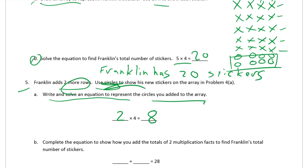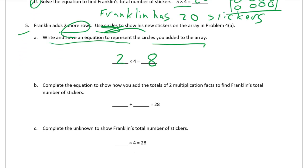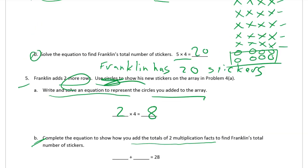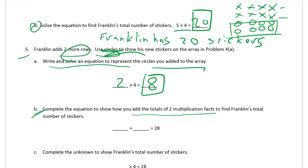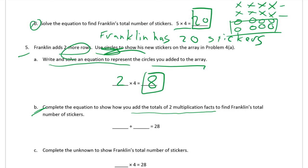Part B: complete the equation to show how you add the totals of two multiplication facts to find Franklin's total number of stickers. Those two totals are: two times four equals eight, and five times four equals twenty. The two totals — we had twenty first, then eight — twenty plus eight equals twenty-eight.